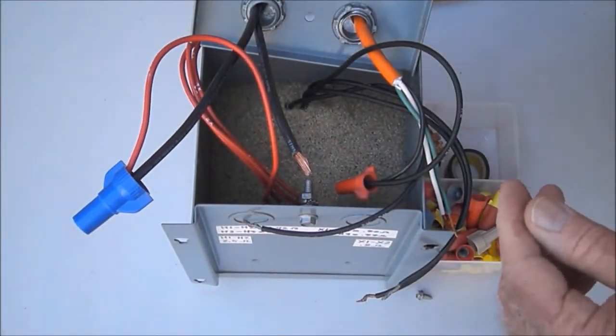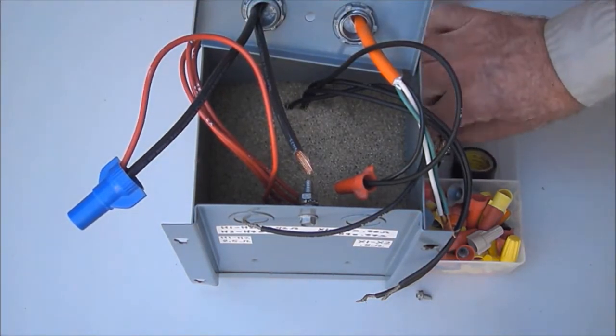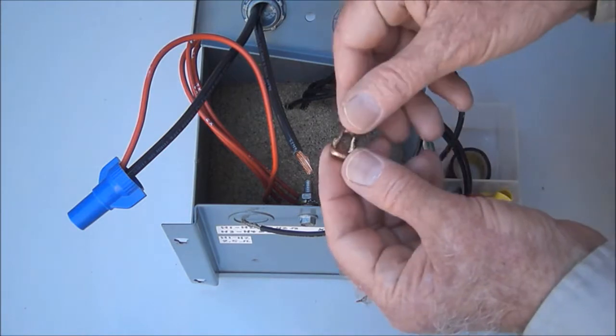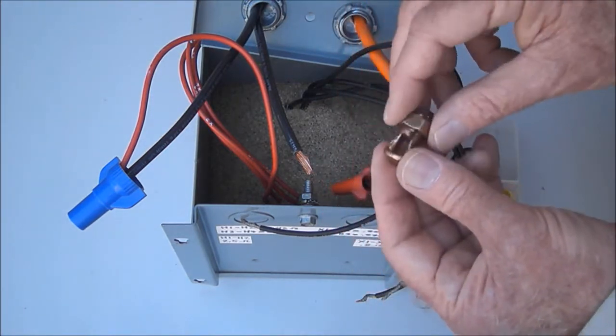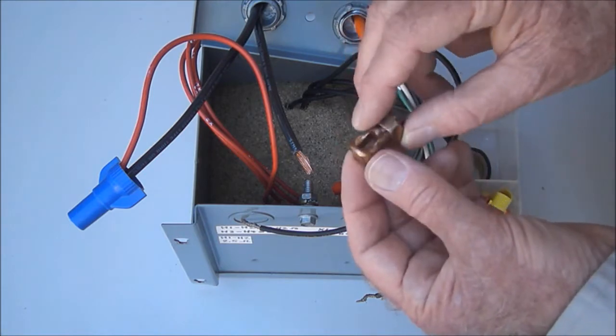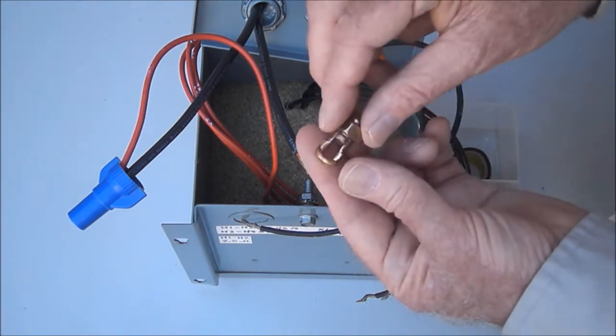Another option is using a piece of hardware called a split bolt, which is usually used for much larger wires. A split bolt is basically a brass or copper colored device with a hole in it.